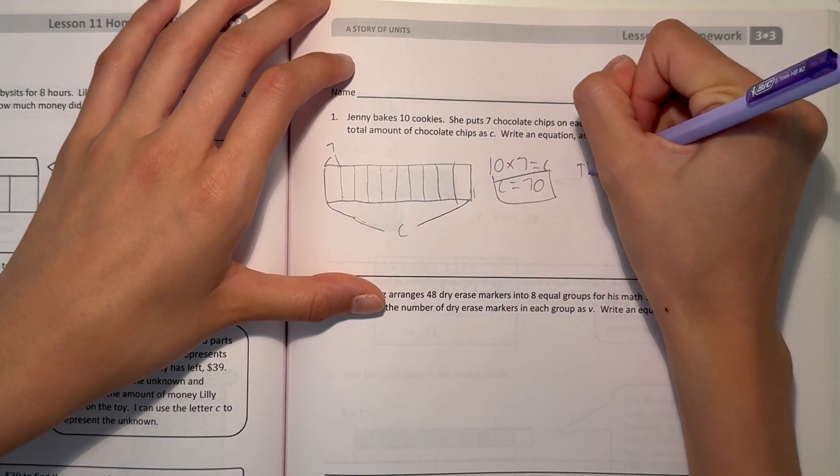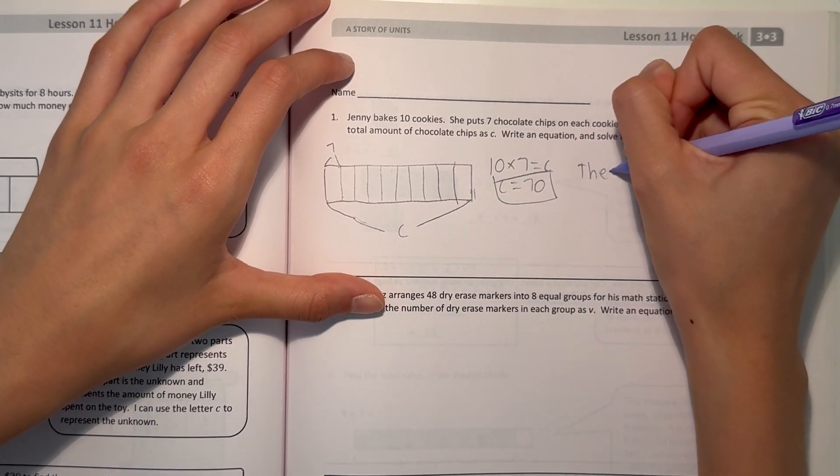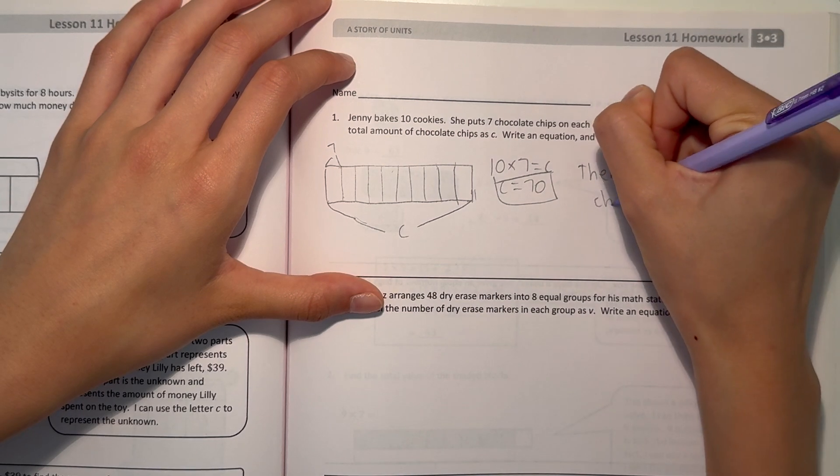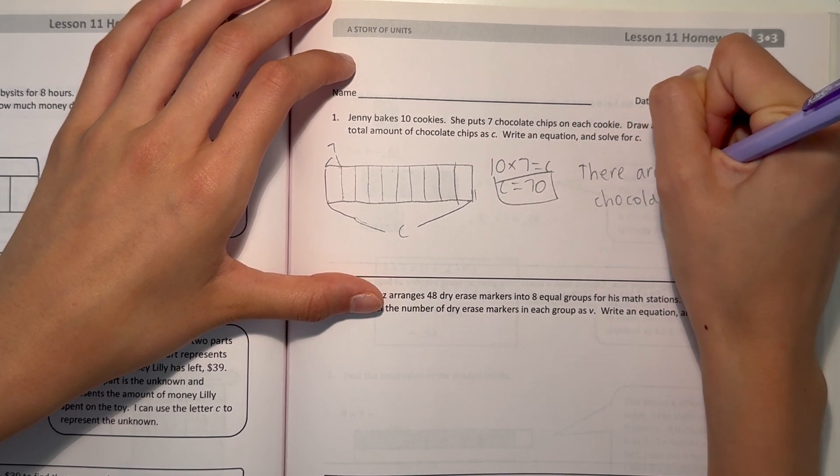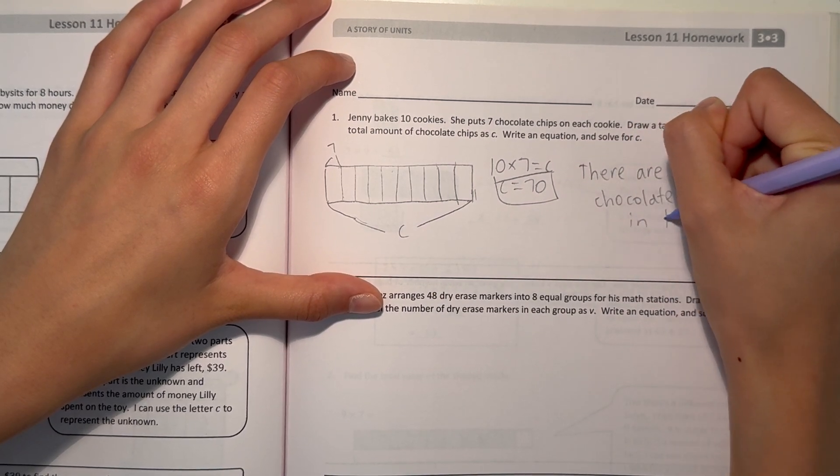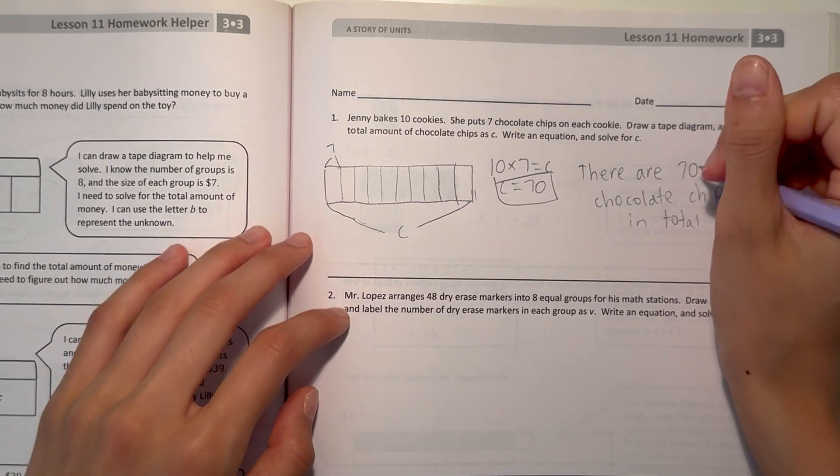That means there are 70 chocolate chips in total. Alright, number 2.